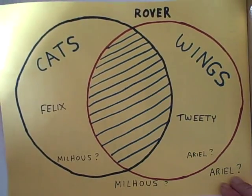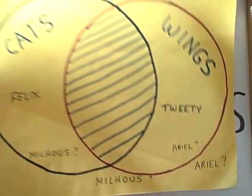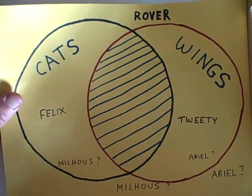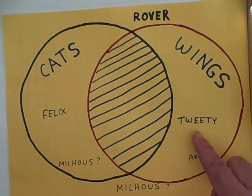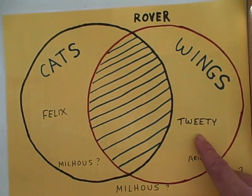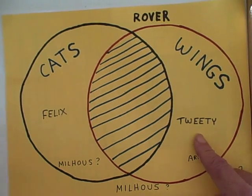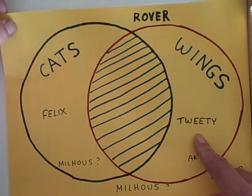Let's take a look at another minor premise from which we can derive a conclusion: Tweety has wings. From that information we know where Tweety fits on this diagram. Tweety has wings, so he's going to be in this crescent. But if he's over here, then we conclude Tweety is not a cat.